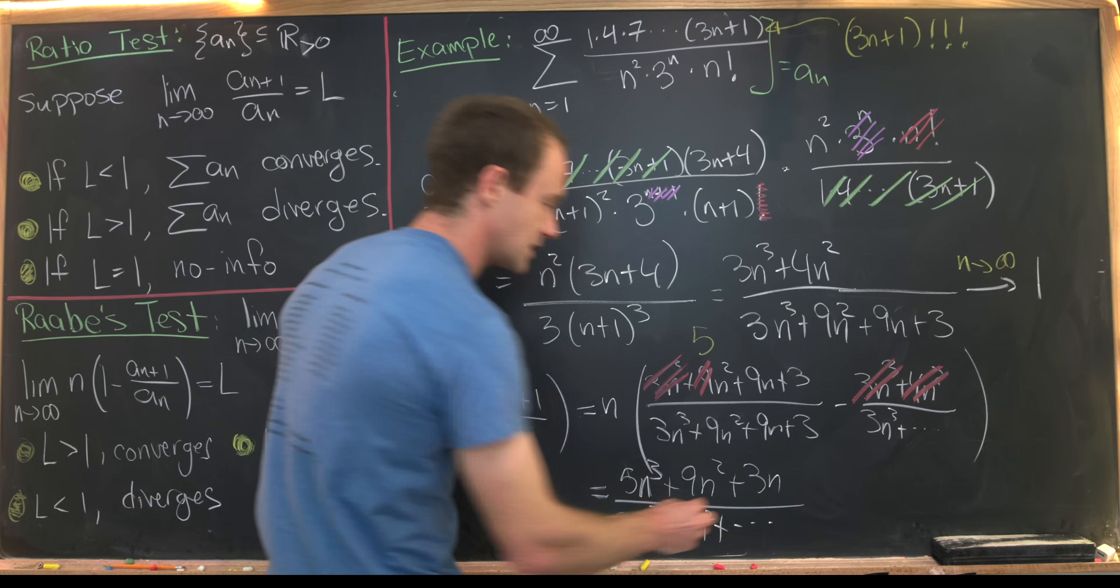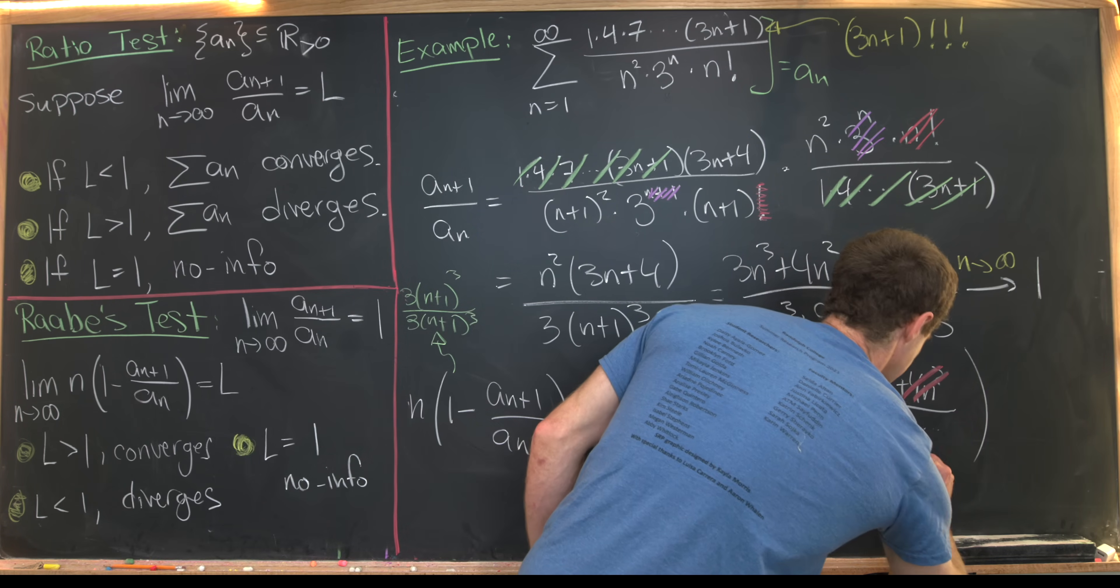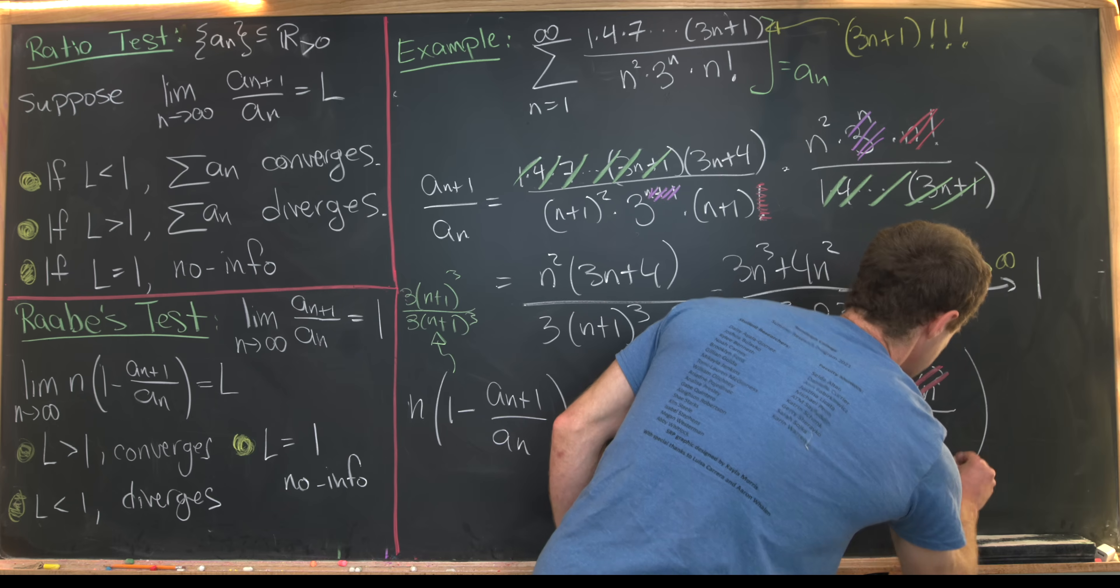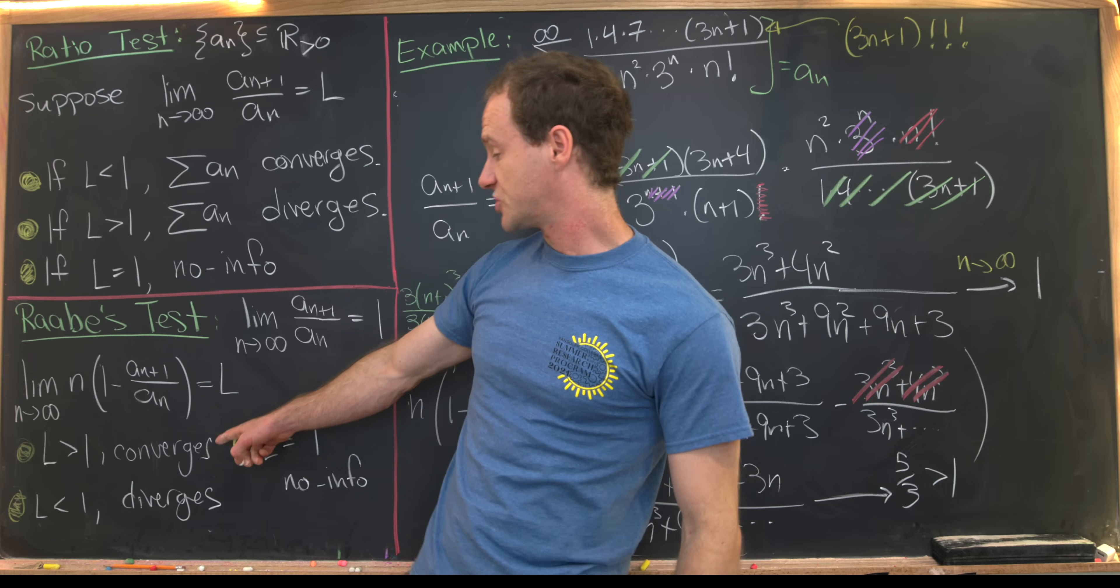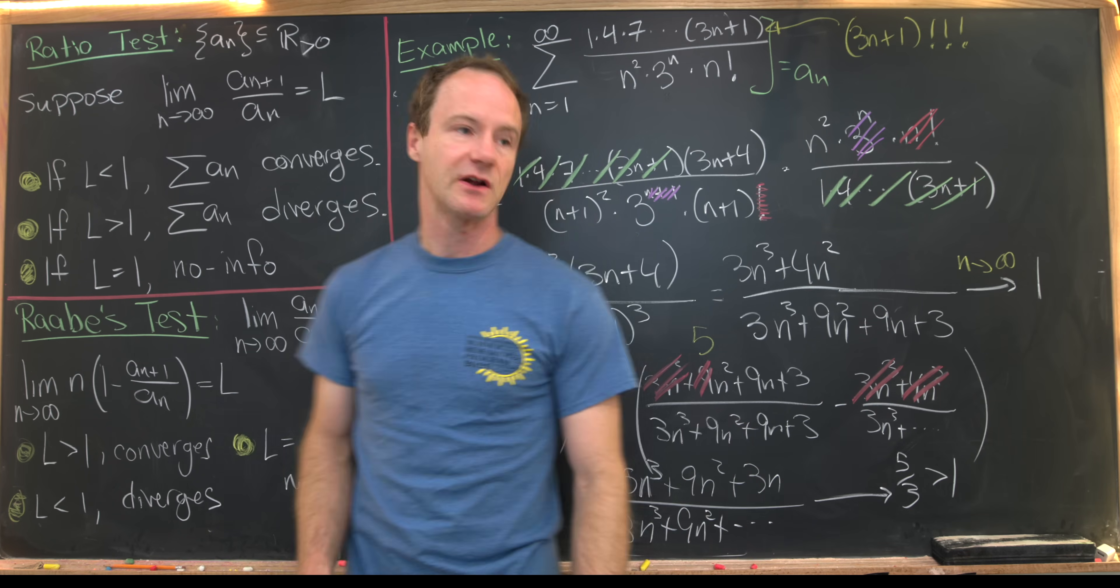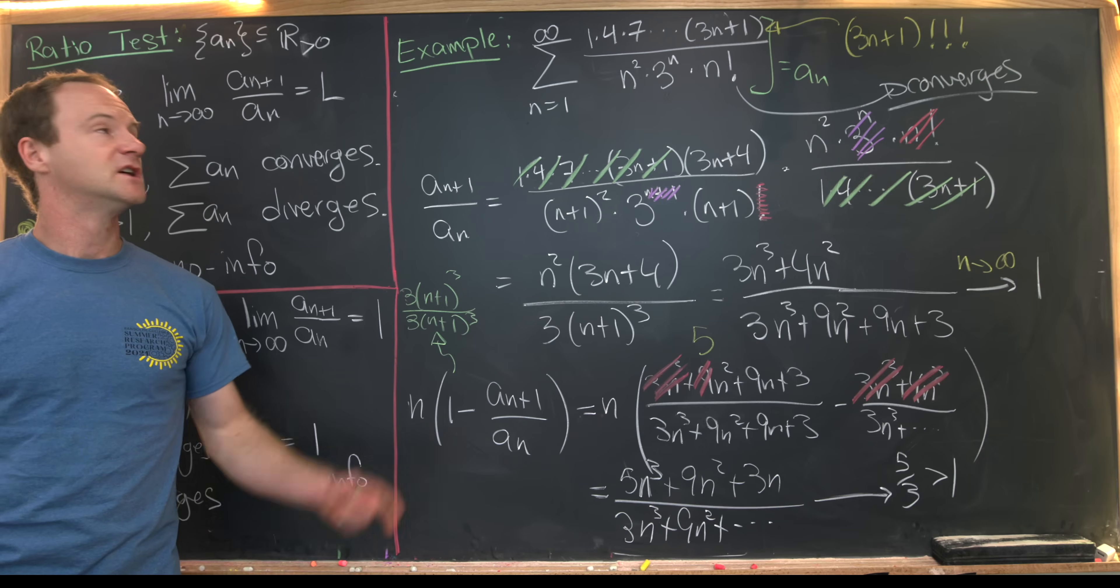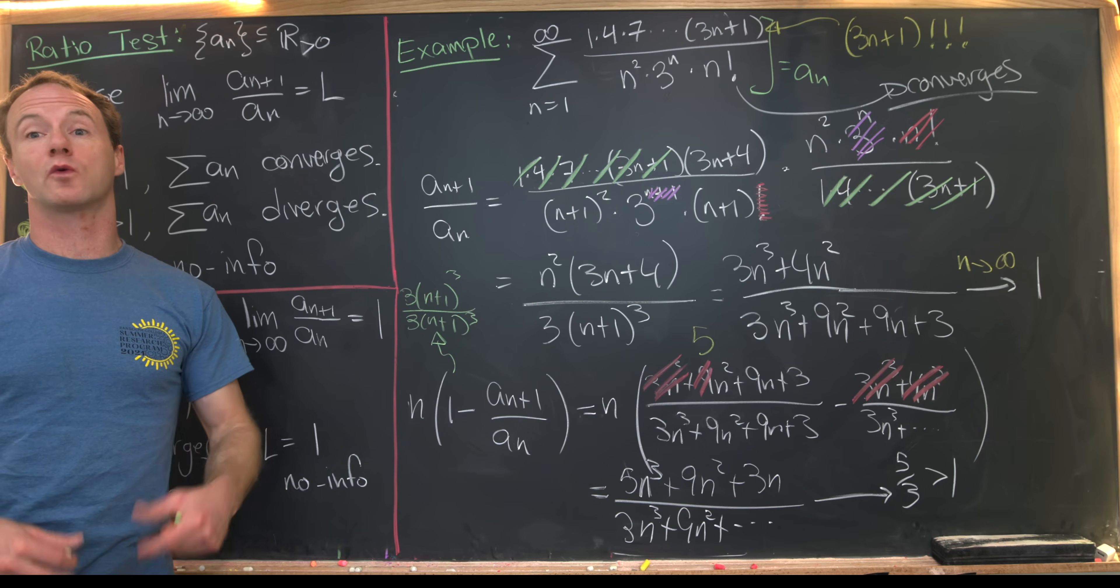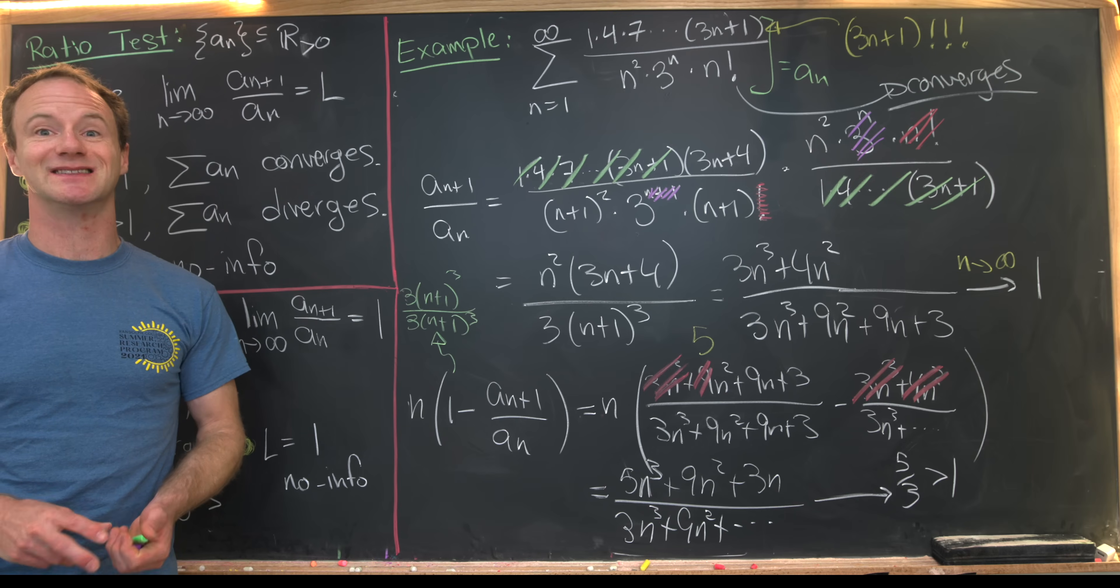But now as n goes to infinity, we just get the ratio of the leading terms, which is 5/3. That's clearly bigger than 1. But for our condition down here, that limit being bigger than 1 means that this thing converges. So we started with the series where the ratio test did not work and we proved that it was convergent using this new test. And that's a good place to stop.